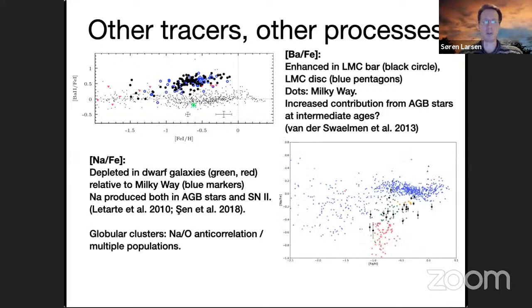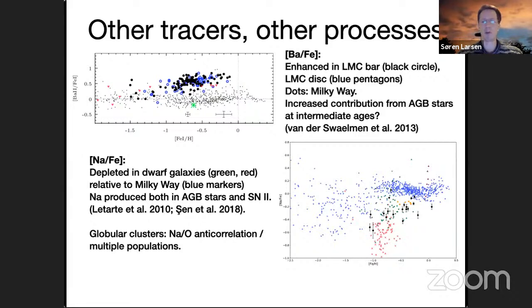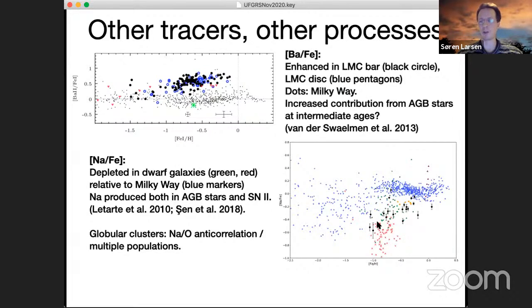Sodium is an element that will come up again — it has a complex history because it can be formed in Type II supernovae, which is probably where most sodium in field stars was formed, but it can also be produced in AGB stars. That becomes interesting in the context of globular clusters where you have anti-correlations between sodium and oxygen. When you compare different galaxies you also see differences in sodium. At a given metallicity there is a difference between the amount of sodium in the Fornax dwarf and in the Milky Way.